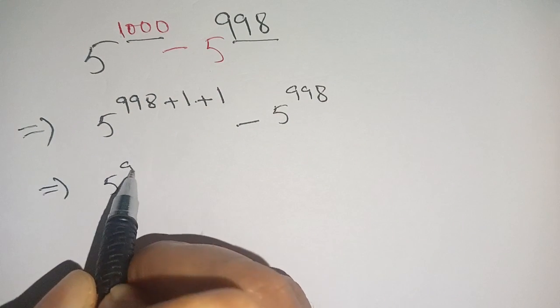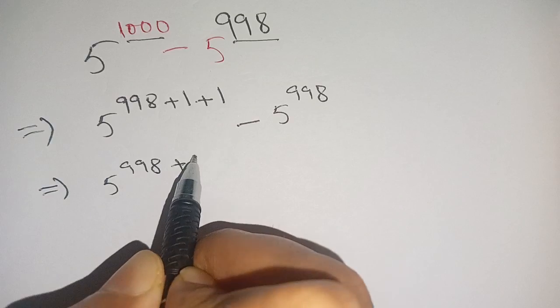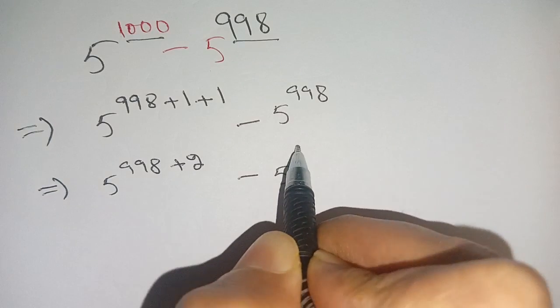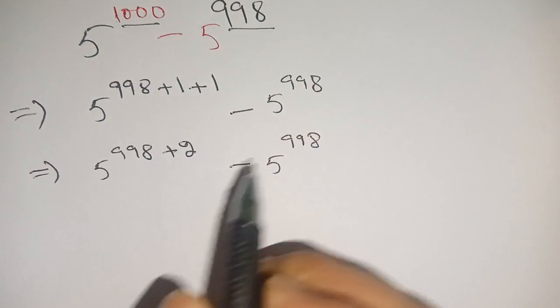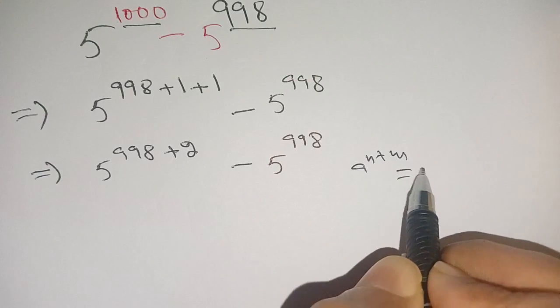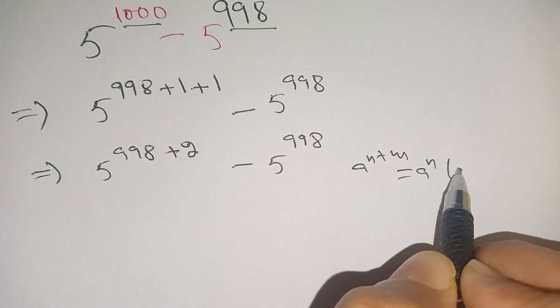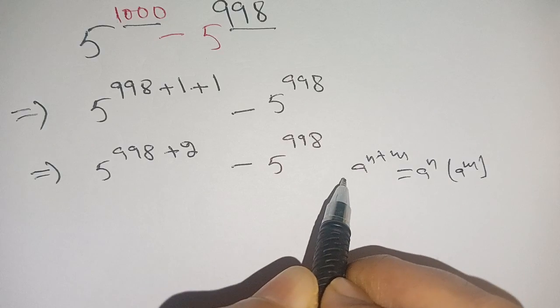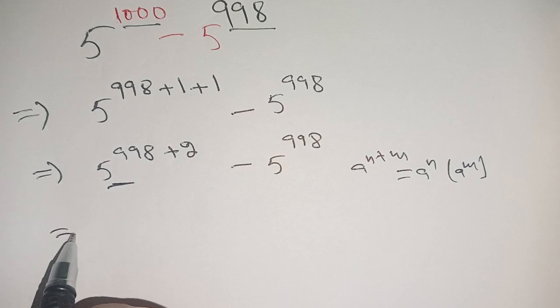We can write this as 5 power 998 plus 2 minus 5 power 998. We know that a power n plus m is equal to a power n times a power m. We use this identity here.